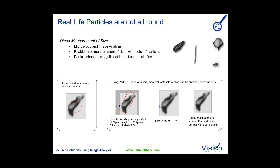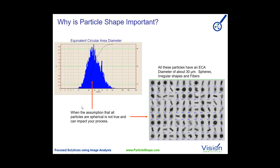That's where direct measurement techniques become more important to the user. When we have direct measurement techniques such as image analysis, we have the ability of actually taking the images of the particles. We can do measurements assuming that they're round, but we can also do direct measurements of their width, their length, aspect ratio, how round the particles are, how smooth the particles are. So you get a lot more information, not just size. This is very important because you can have multiple particles of different shapes, and if you assume that they're round, they're going to give you a false sense of understanding.